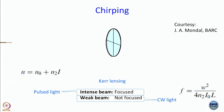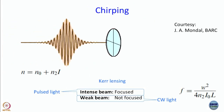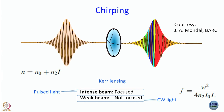A disadvantage of Kerr lens mode locking is that it also introduces chirp, which effectively broadens the pulse. So before we can make a good laser, we have to correct for this chirp.